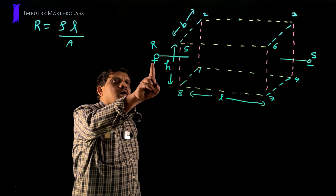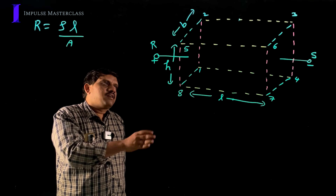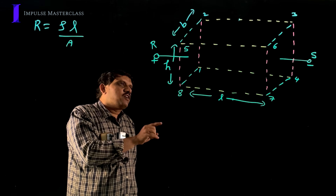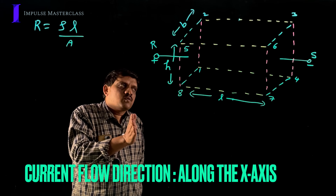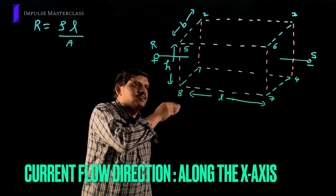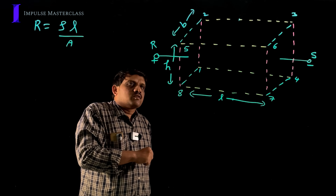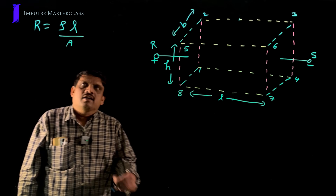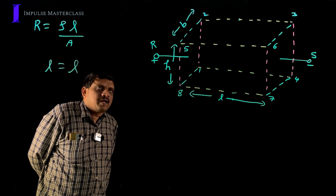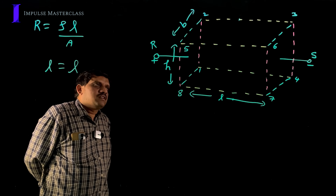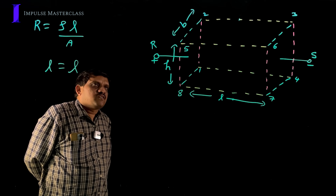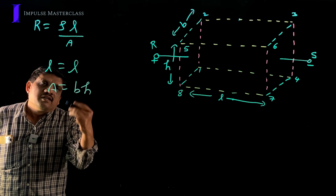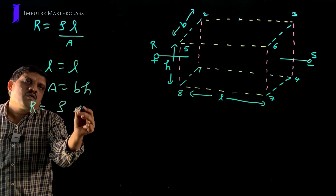Suppose the battery is applied between terminals R and S — positive terminal at R, negative at S. That means positive terminal is applied to face 1258 and negative to face 3476. Current flows from R toward S. The length along the current flow is the distance between face 1258 and face 3476, which equals L. The cross-sectional area perpendicular to RS is face 1258 or face 3476, equal to B times H. Therefore, resistance is R = ρL/(B×H).